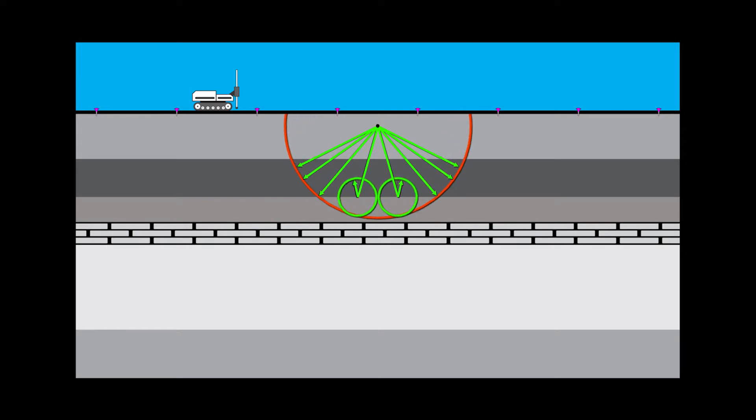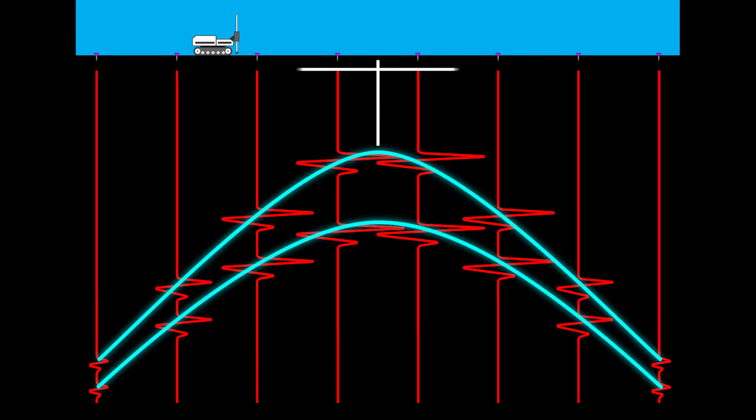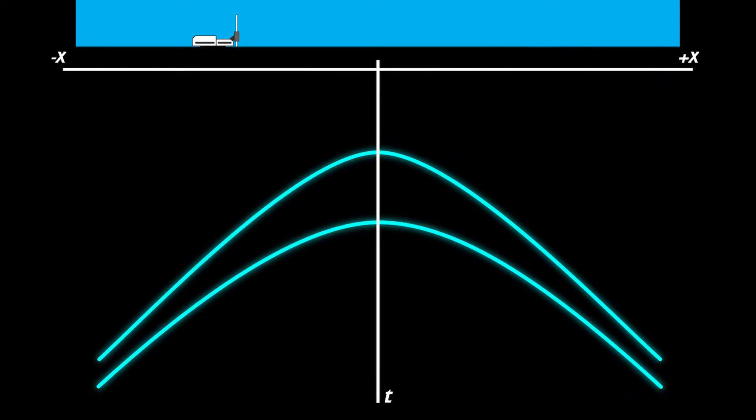And second, the reflections off the second layer and the responses at each geophone. Now, if we combine both sets of reflections from the first and second layer, we end up with something very interesting. The reflections appear as hyperbolas, which is an odd representation of the subsurface.